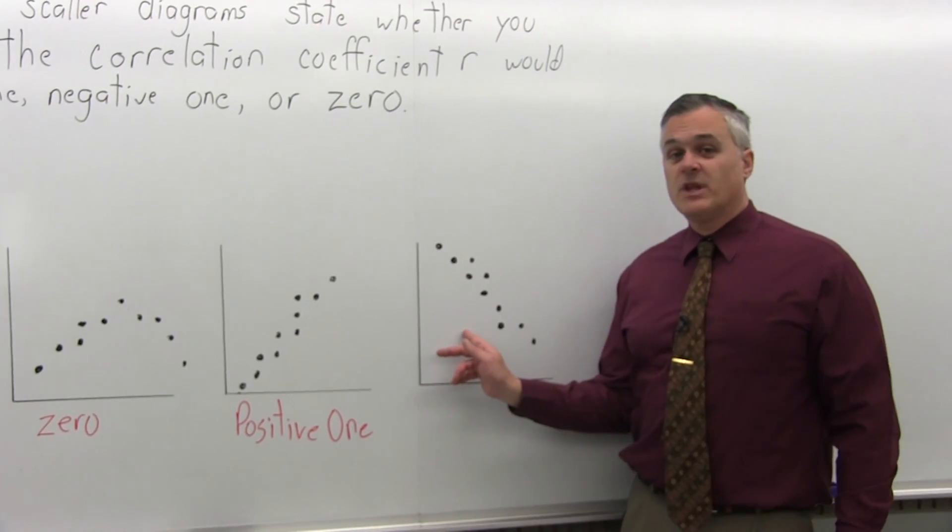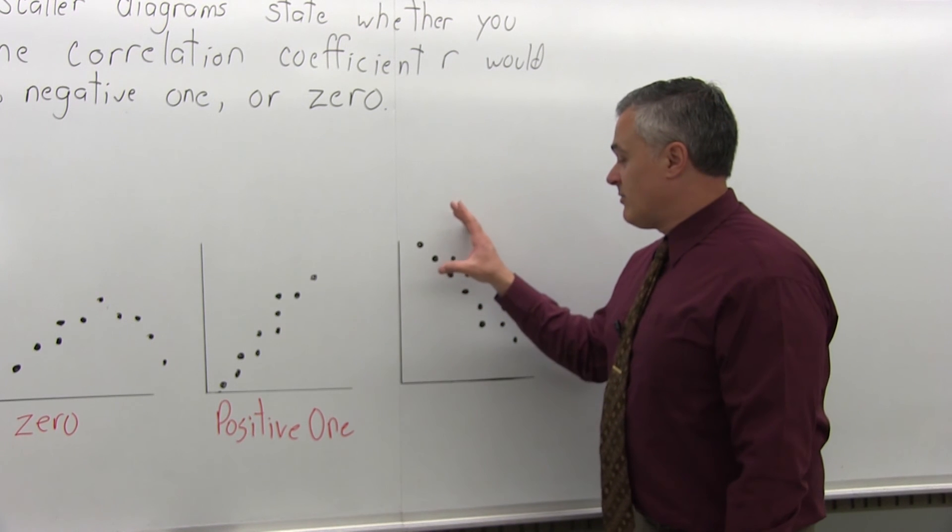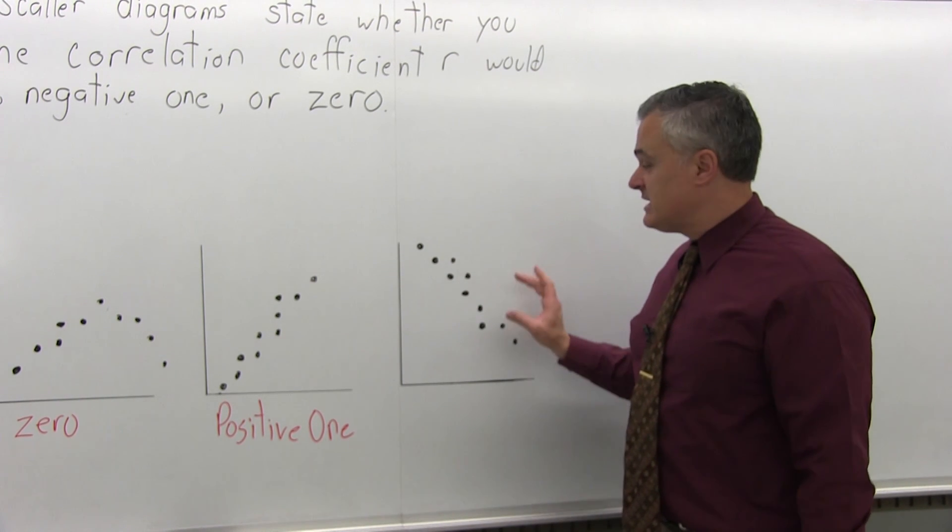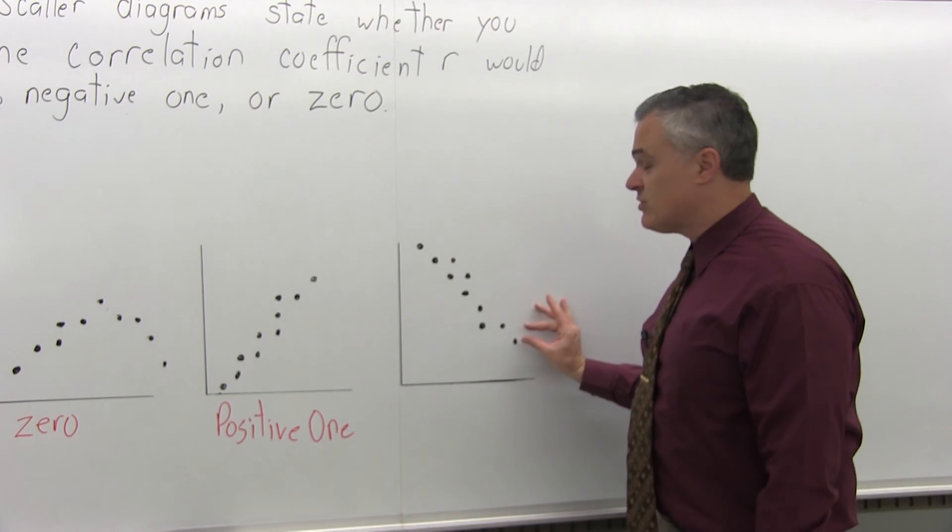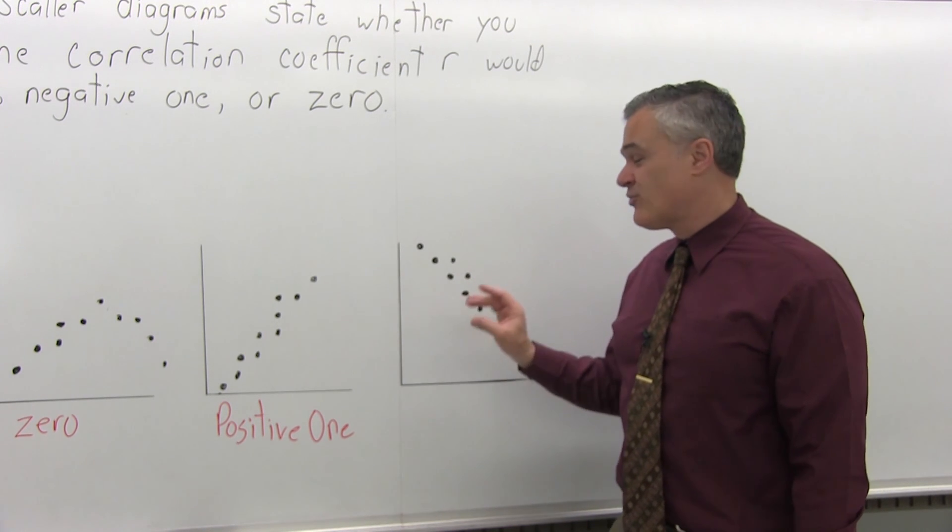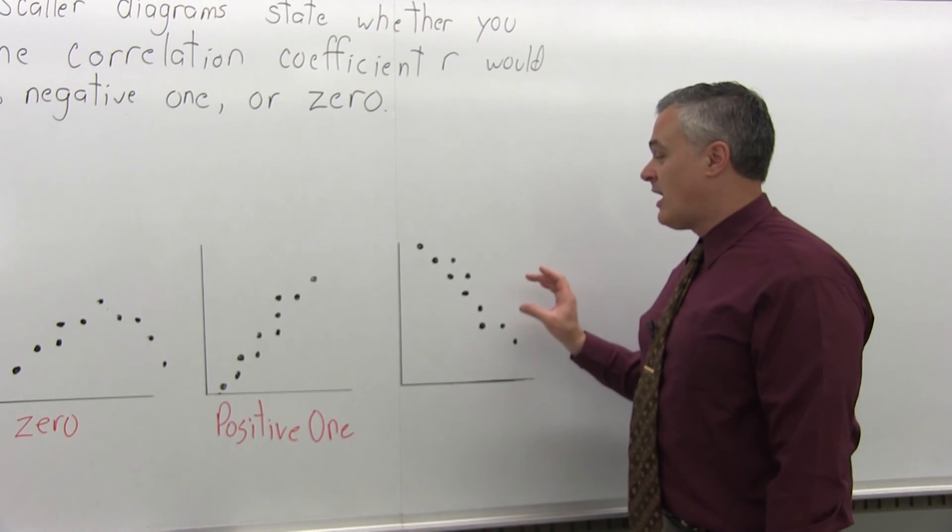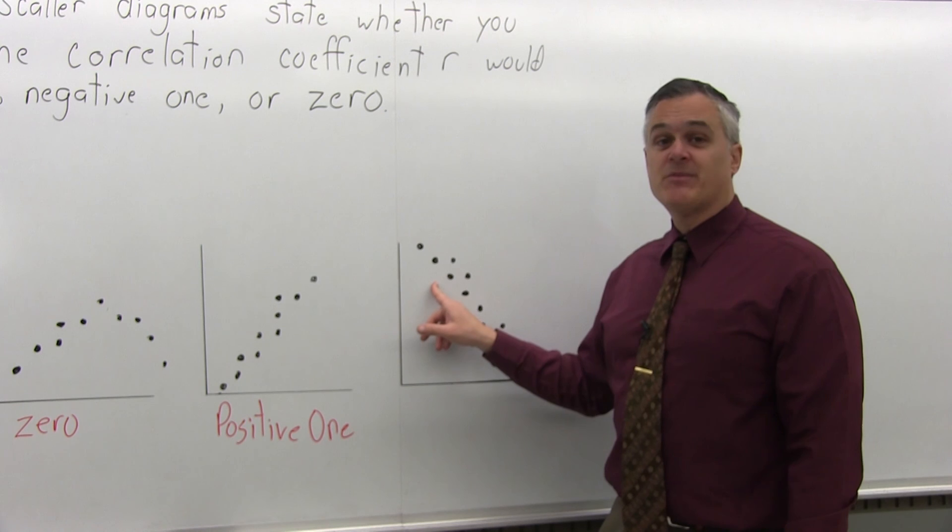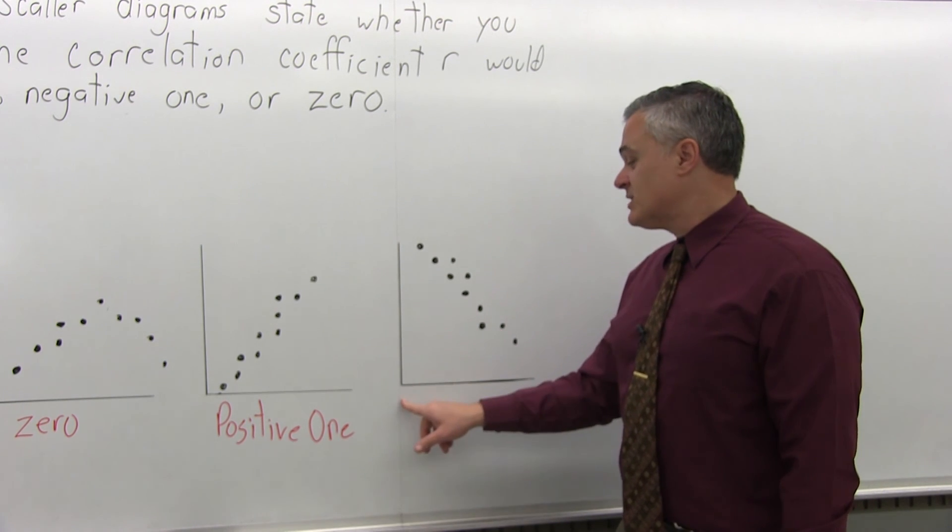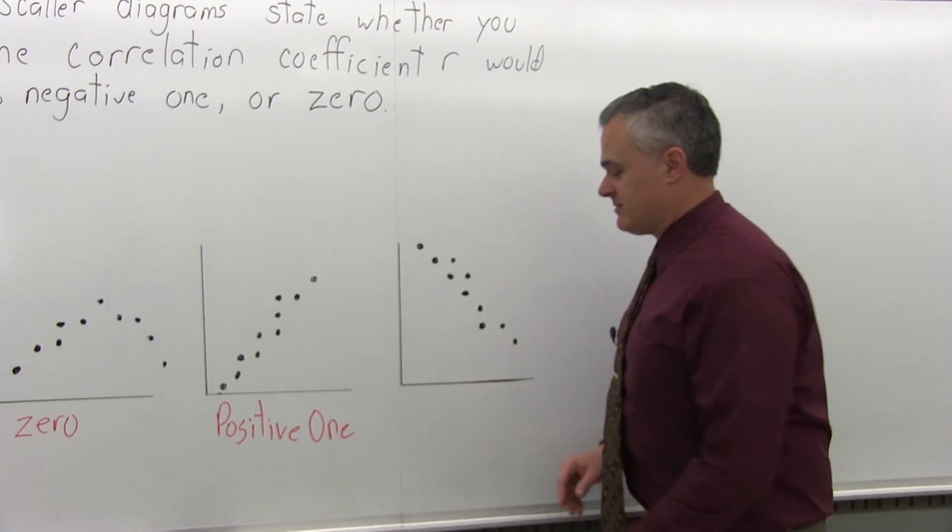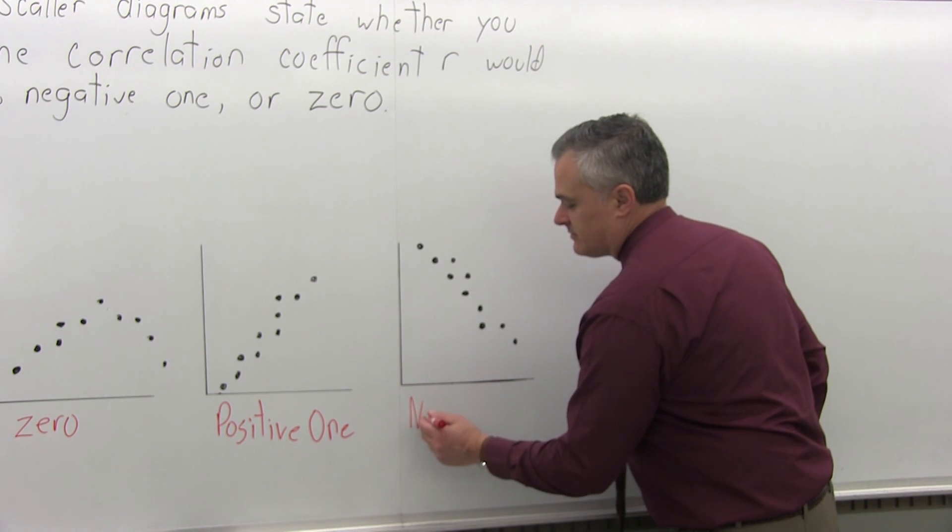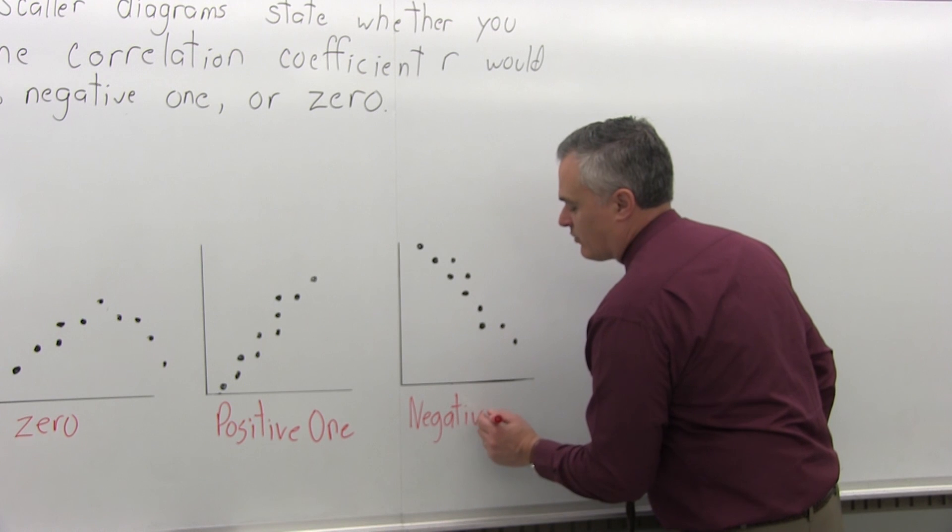And finally, the last one. Again, certainly a good linear relationship. You can see they're following very closely to a line. Again, not right on the line. You're never really going to see right on the line. So it is close to 1, but this time it's negative 1 because as you move from left to right, it's coming down. So the last one is close to negative 1.